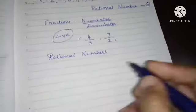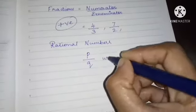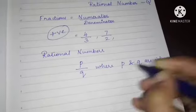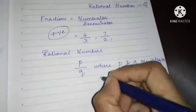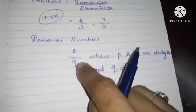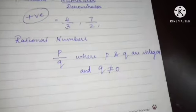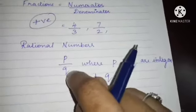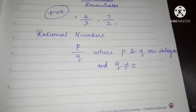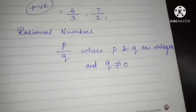Rational numbers are in the format P by Q, where P and Q are integers, and Q is not equal to zero. So the numerator and denominator will be integers, meaning they can be either positive or negative, and the denominator cannot be zero — as usual in fractions.